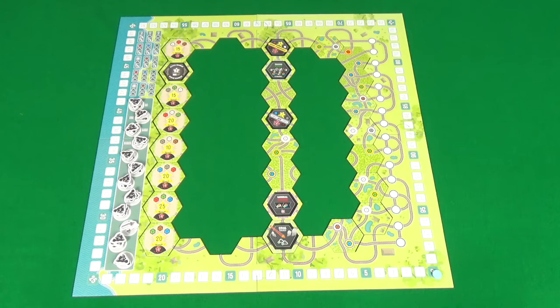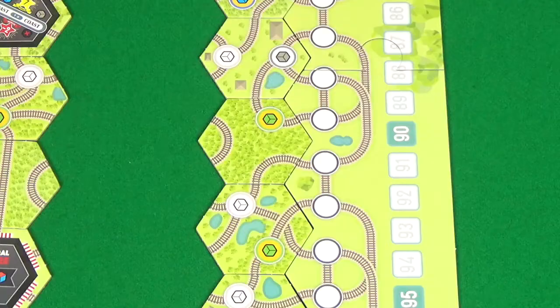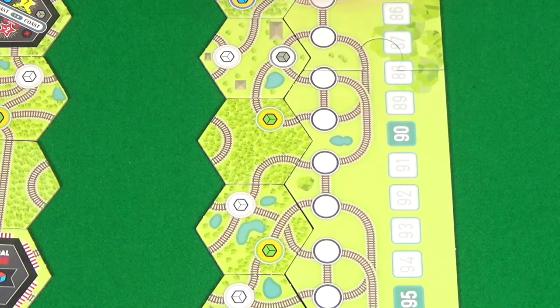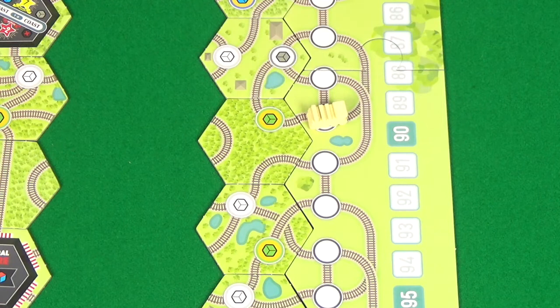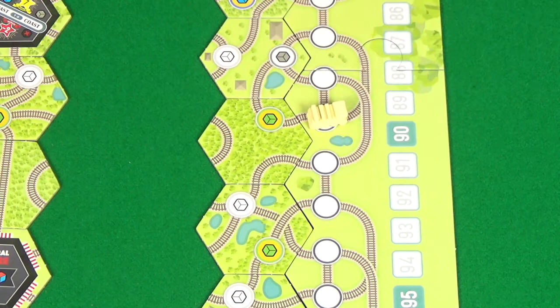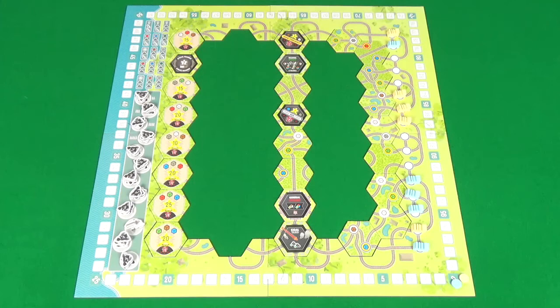The final thing to do when setting up is for players to place their trains on these east coast stops. You'll start with the player to the right of the first player, who's your last player in the round, and they'll choose one of these spaces to place one of their trains on. Then, in counterclockwise order, each player will place another train, and they can't go on a space that already has a train. Once all players have placed their trains, you're then ready to begin, and you're all set up and ready to go.